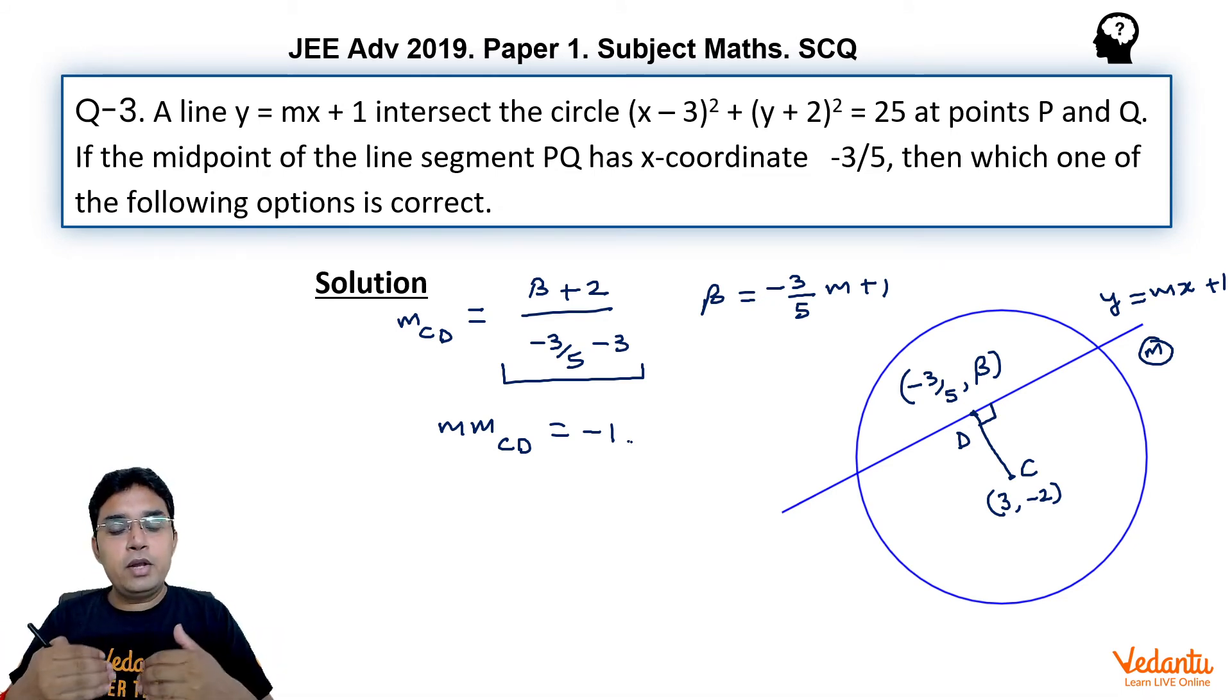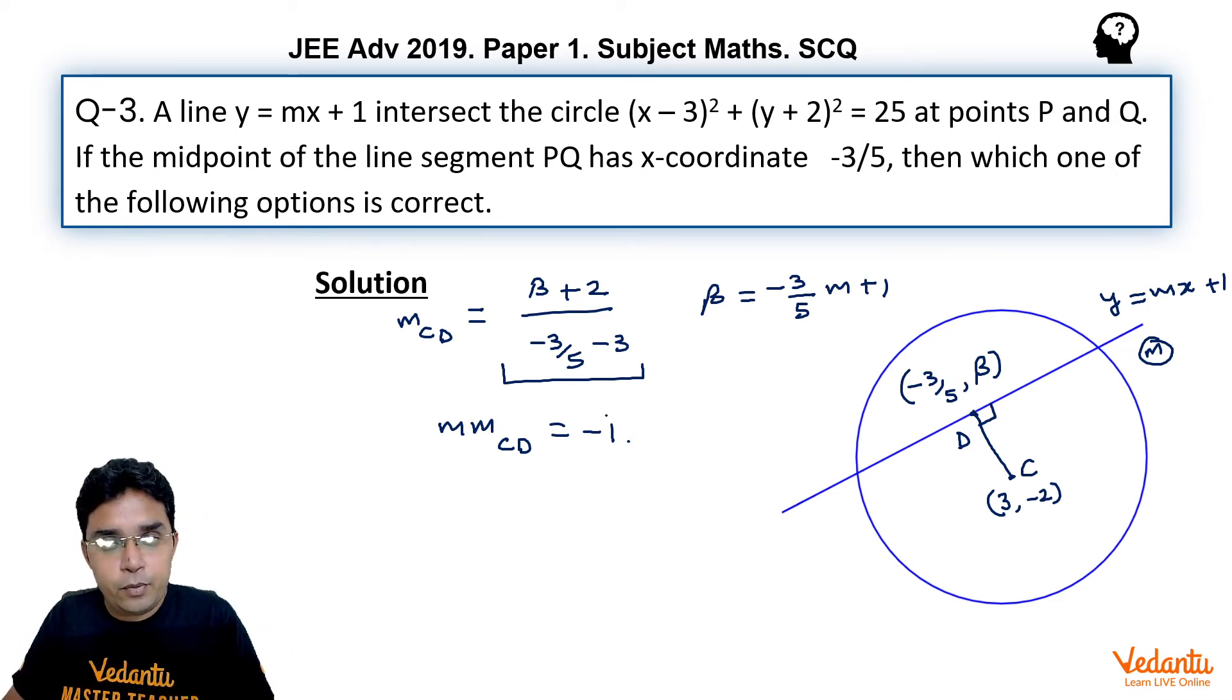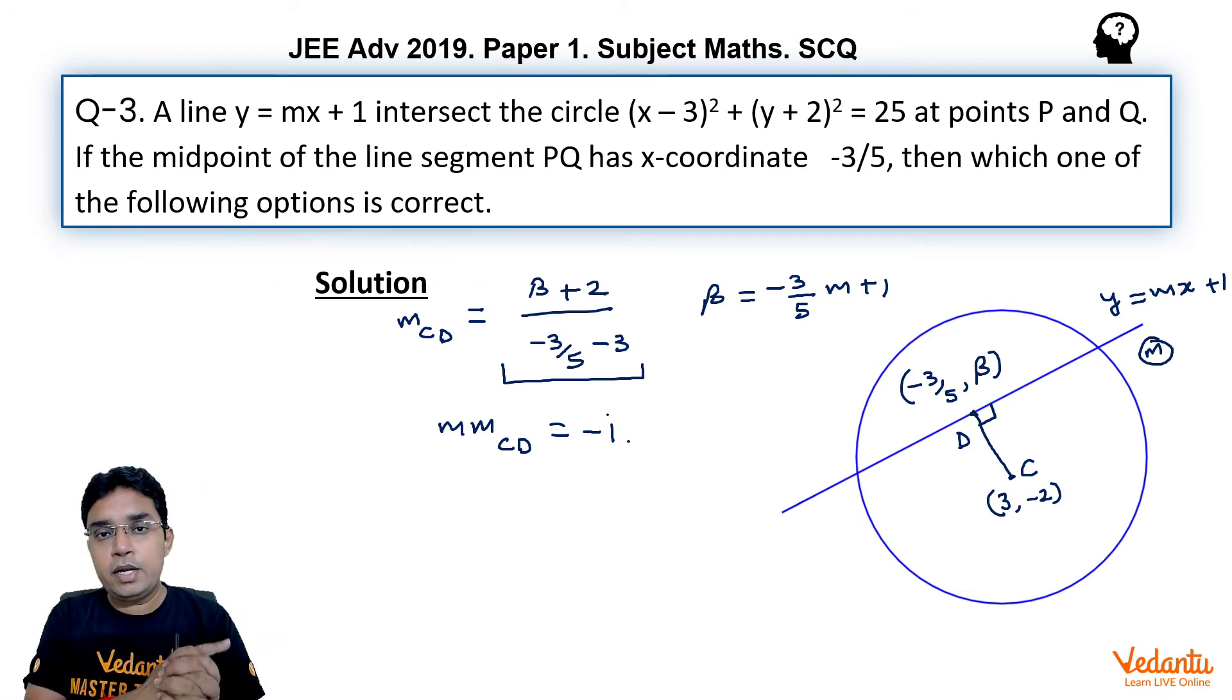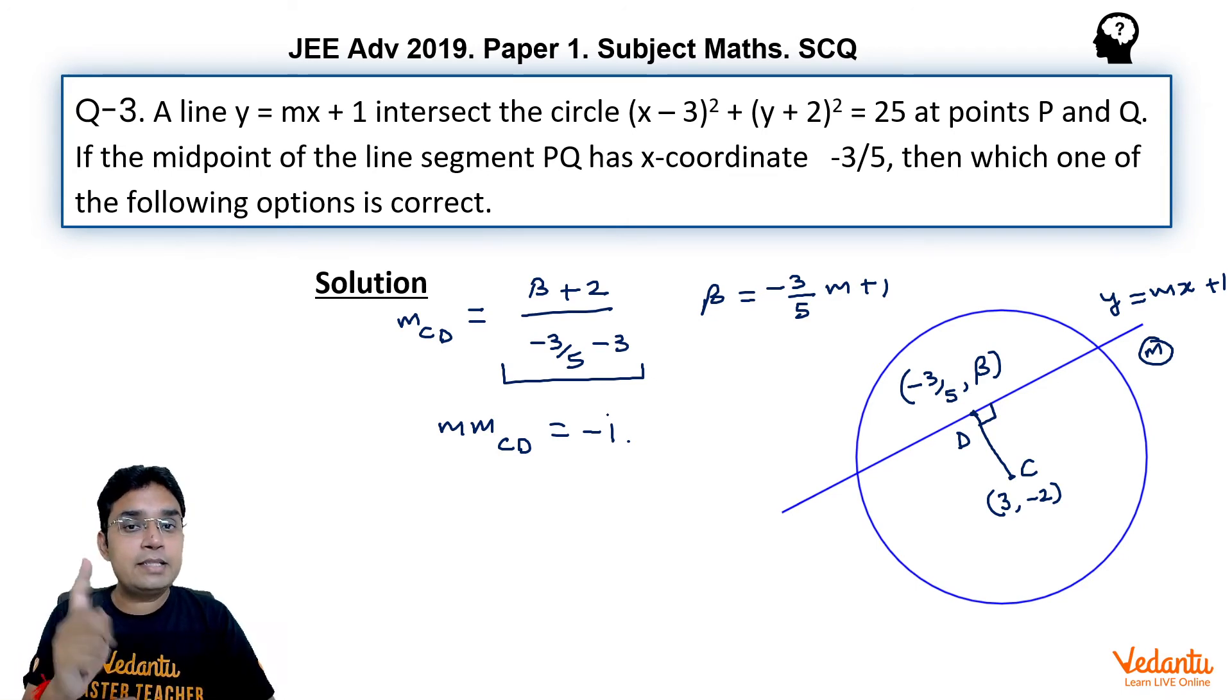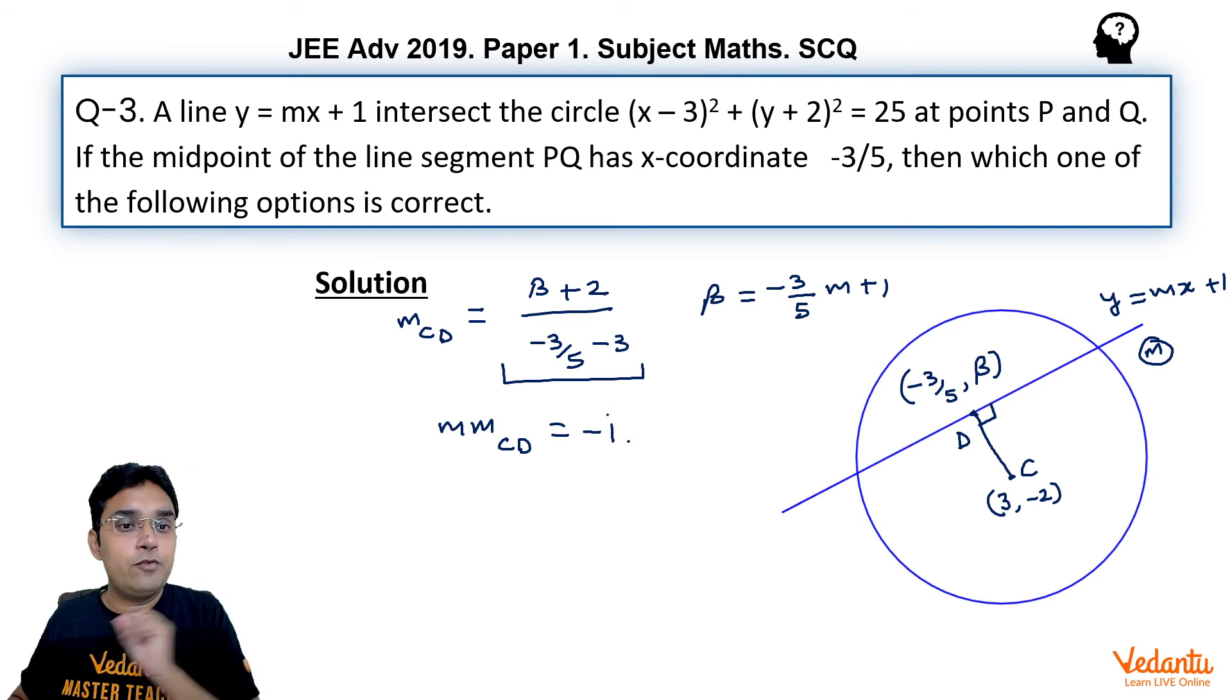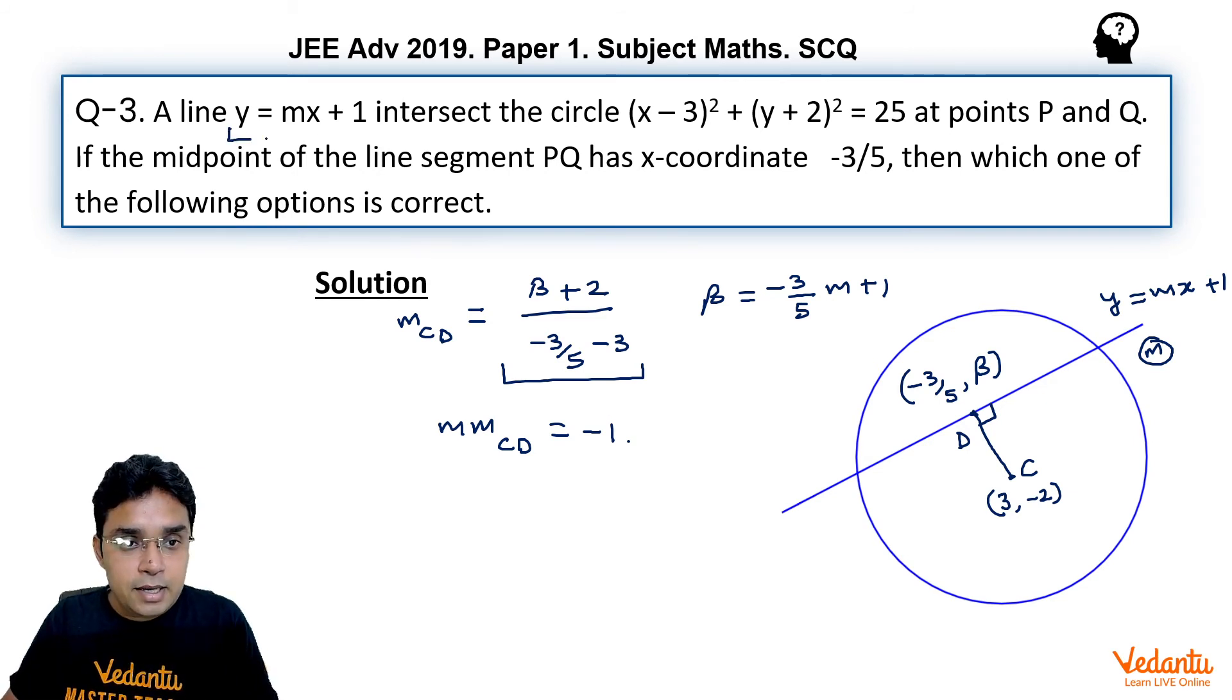In fact, we can also do this question by one more method, that is chord bisected at given point using t equals s1. I am leaving this method for you to do, but again you will get same quadratic and you can get same values of m. Now I will tell you one interesting fact about this question. Please listen carefully, and this is that line is passing through (0, 1) for all possible values of m. You can check.